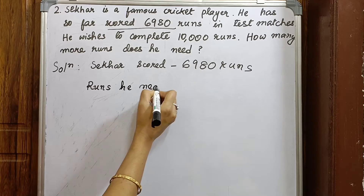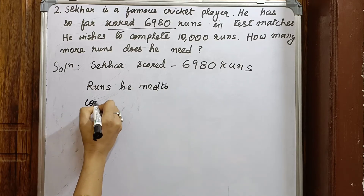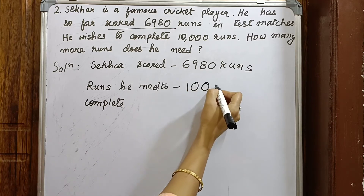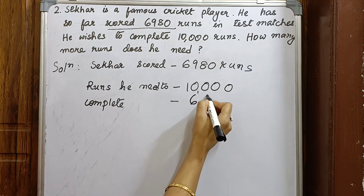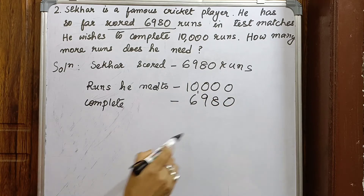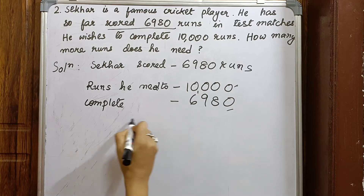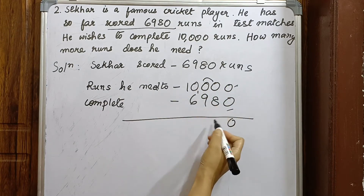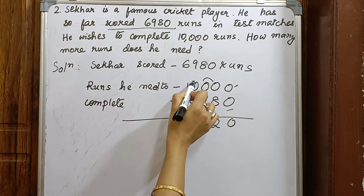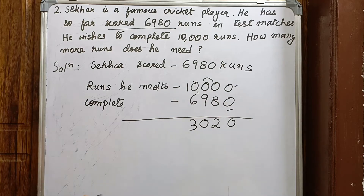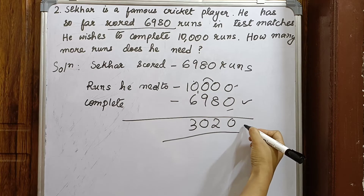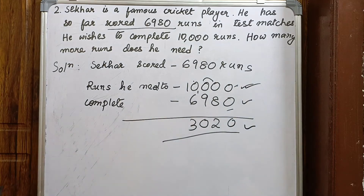He needs to complete 10,000 runs. So it will be 10,000 minus 6980 — the subtraction of these two numbers. 10 minus 8 gives 2 (with carry), 9 minus 9 is 0, 9 minus 6 is 3. So he needs 3,020 more runs to complete 10,000.